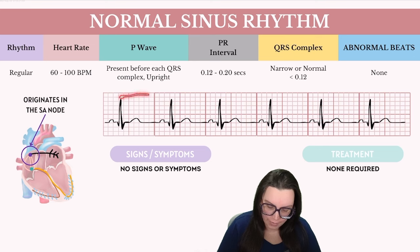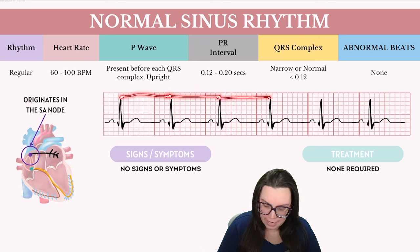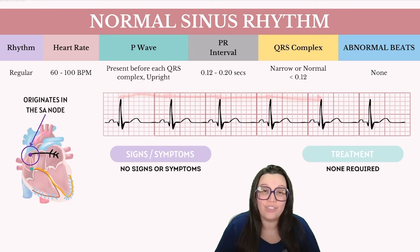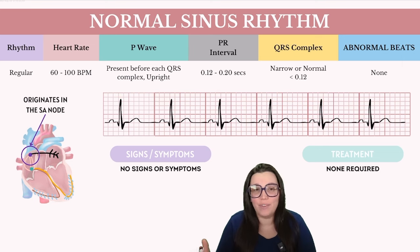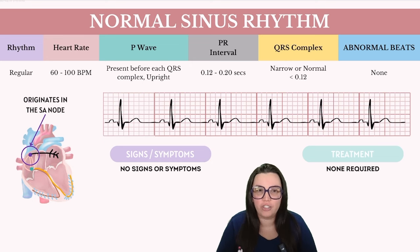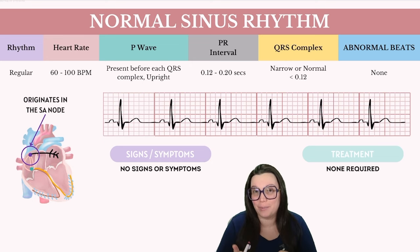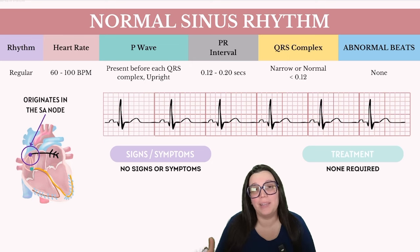Using calipers or a piece of paper, you can mark and measure from the start of one R wave to the next R wave and then continue that measurement all the way down your six-second strip to ensure that there's consistency between each R wave interval. Although slight variations over time are normal, abrupt changes from beat to beat indicate that we have some kind of irregularity.